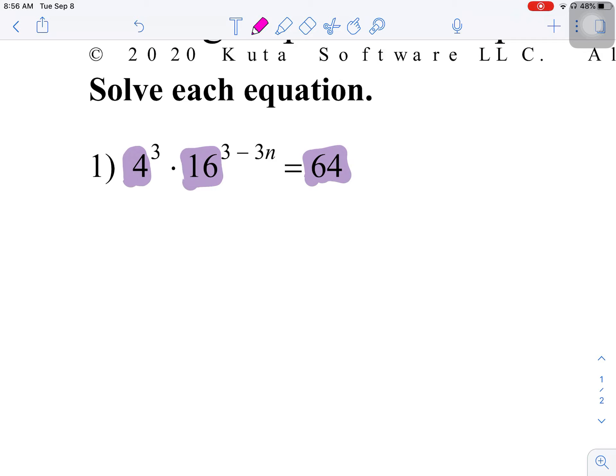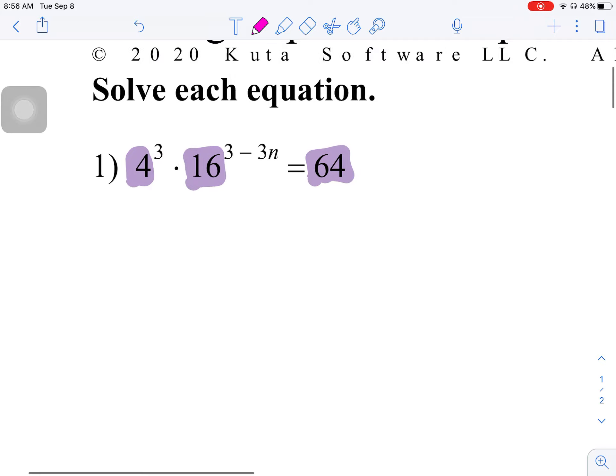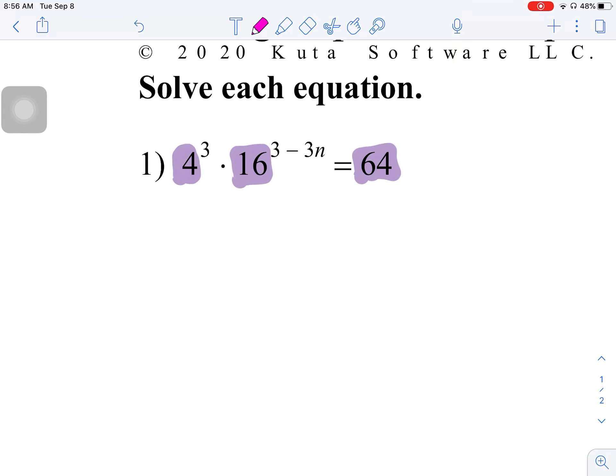As it is currently written, it is not possible to combine these. You can't take 4 times 16 and then do something with the powers. Order of operations says no. But what you can do is think about 4, 16, and 64 as needing common bases.